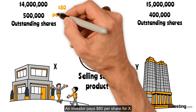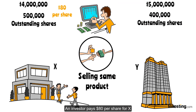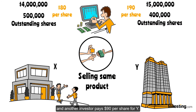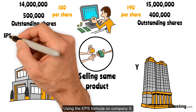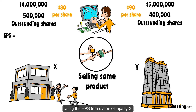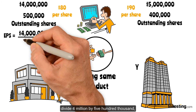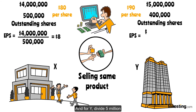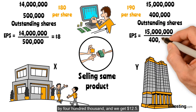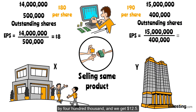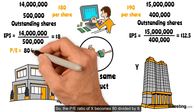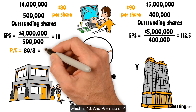An investor pays $80 per share for X, and another investor pays $90 per share for Y. Using the EPS formula on Company X: divide $4 million by 500,000, we get $8. And for Y, divide $5 million by 400,000, and we get $12.50. So the P/E Ratio of X becomes 80 divided by 8, which is 10.